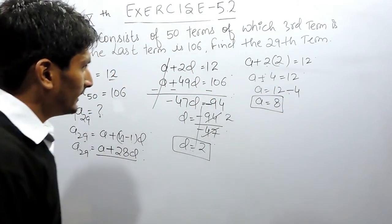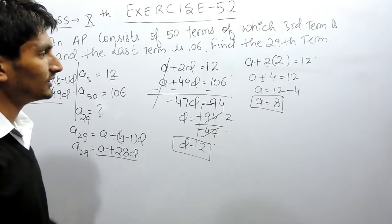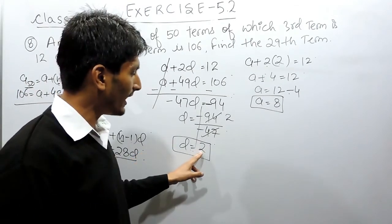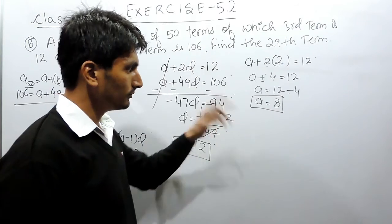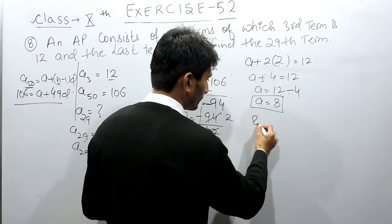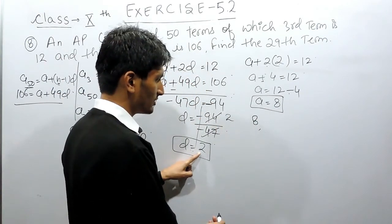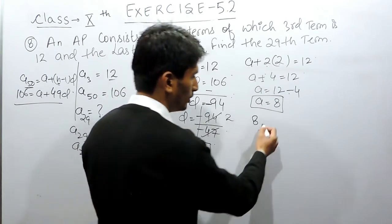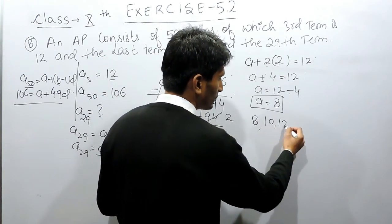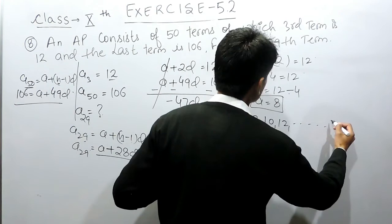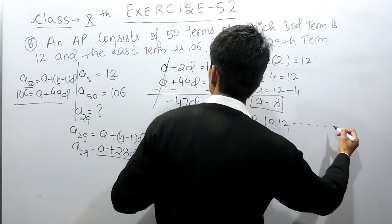So in this question the AP will start from 8 and you have to add 2 to form this AP. So the first term will be 8, the common difference which you have to add is 2, so the next term will be 10, 12, and so on, and the last term will be 106.